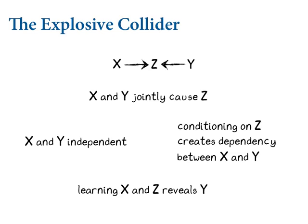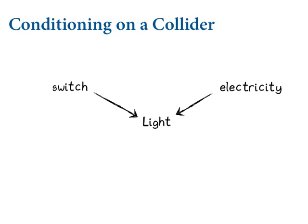Another way to think about colliders: learning X and Z reveals Y — there's a 'finding out' effect. Imagine a light controlled only by a light switch and the presence of electricity. If I tell you the switch is on and the light is off, can you tell me whether the electricity is working? Of course — because it's logic. This is how colliders work. It also works in continuous systems. If the electricity is on and the light is on, the switch must be on — otherwise the light wouldn't be on. When you get confused about colliders, think of the light switch.